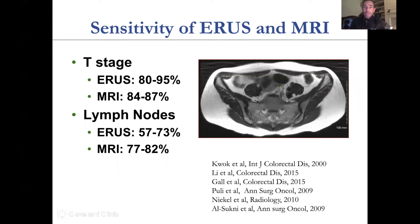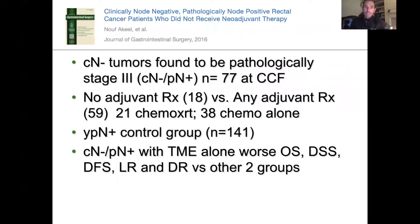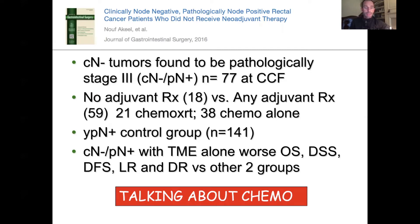What about ultrasound versus MRI? There are classic differences between the two in T-stage and N-stage. We looked at patients who were clinically node-negative but pathologically node-positive and did not receive neoadjuvant therapy. This is the scenario of a T2 N0 mid-rectal tumor taken right to surgery. We found a certain percentage were misstaged, with microscopic disease that didn't show up on MRI. Comparing the 18 who had no adjuvant radiation therapy versus those who did, and against a control group that was node-positive from the beginning, the clinically node-negative, pathologically node-positive group with TME alone had worse overall survival, disease-free survival, local recurrence, and distant recurrence.